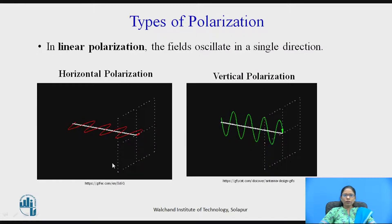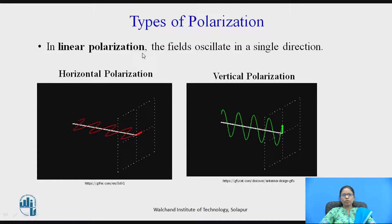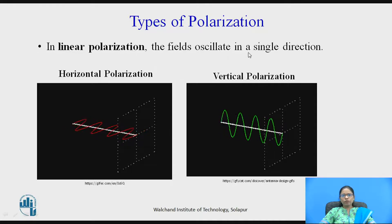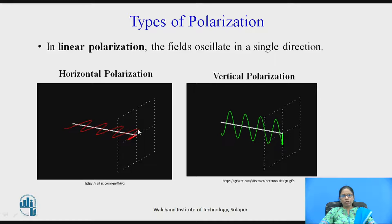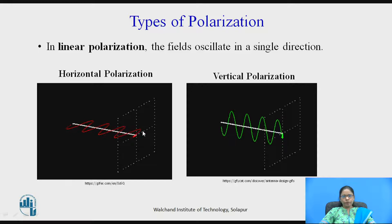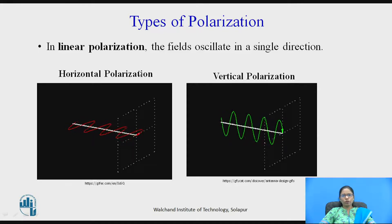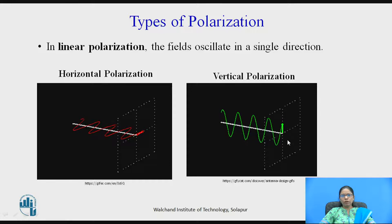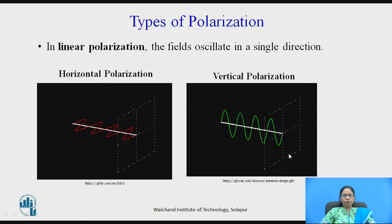There are different types of polarizations: linear polarization, circular polarization, and elliptical polarization. In linear polarization, the fields oscillate in a single direction. The wave in red color is oscillating in the horizontal direction, so it is called horizontal polarization. The wave shown in green color is oscillating in the vertical direction, so it is called vertical polarization.